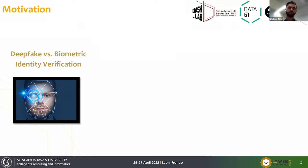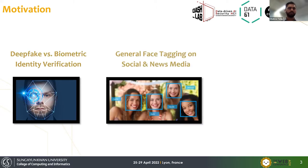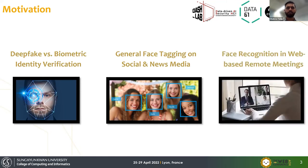For the motivation of this work, we are evaluating different face verification APIs. Face verification APIs are used in different applications — for example, in biometric identity verification, general face tagging on social media and news media, and face recognition in remote meeting settings. In all those scenarios, if a person can impersonate someone else using deepfake methods, they can bypass biometric identity verification, a victim could be tagged in an image they don't belong to, or someone can take an exam in a remote meeting setting using a deepfake.